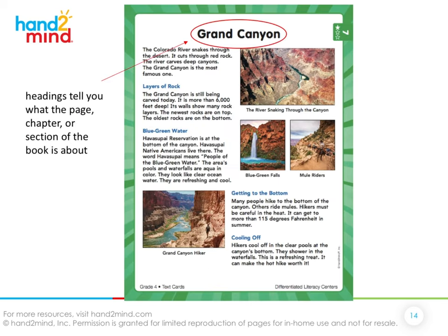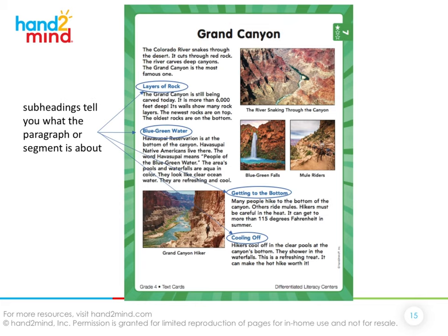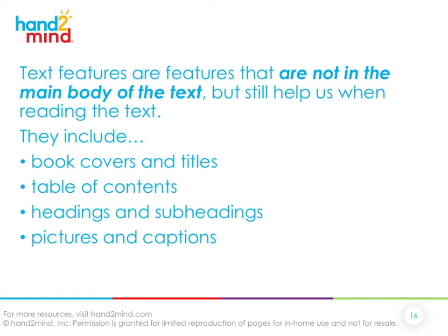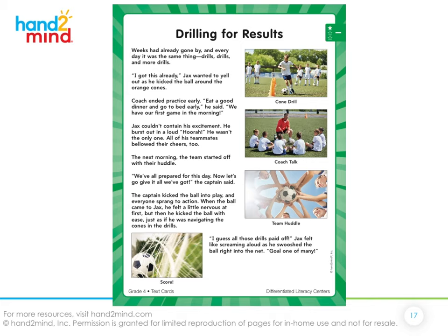Text features also include headings and subheadings. The heading tells you what the page or chapter section of the book is about — in this case, the Grand Canyon. Then we have subheadings, which are the bolded words inside the page, telling us what individual paragraphs are about. For instance, the first paragraph is about layers of rock, the second about blue-green water, the third about getting to the bottom, and the fourth about cooling off. These help you build understanding.